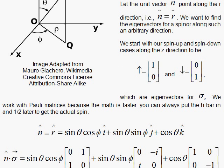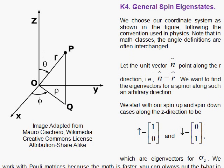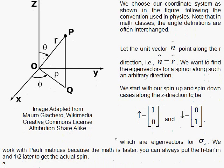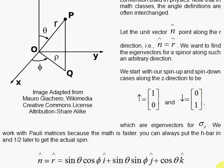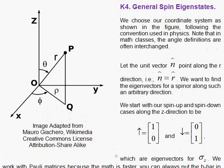We want to do this in general, so we go to spherical coordinates. In physics classes, theta is defined this way and phi. We're going to let r be 1, and if r is 1, we can think of this as a little unit vector, r hat or n hat. We'll use n hat for the notation. This unit vector has neat properties — the z component is cosine of theta.